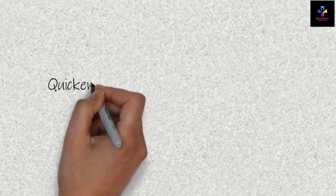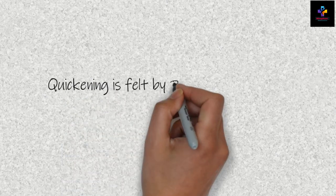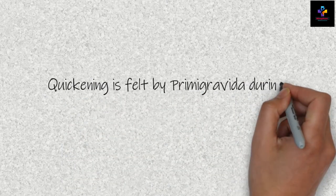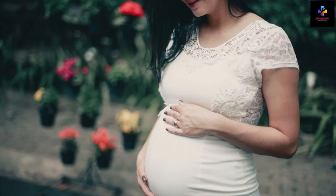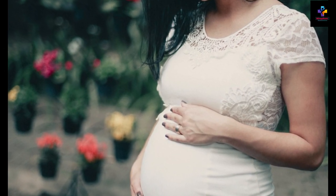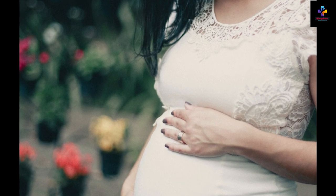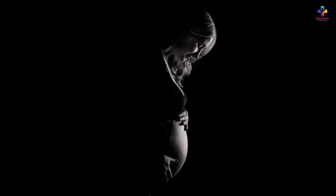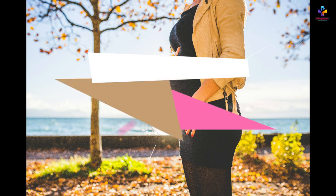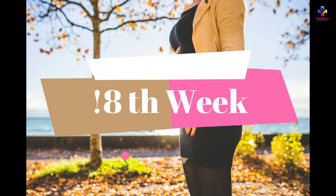Quickening is felt by primigravida during which week? The options given were 32 week, 24 week, 18 week, or 28 week. Quickening is a process which is felt by a female who is pregnant. It is the movement of the baby. Quickening is felt by primigravida during 18 weeks.